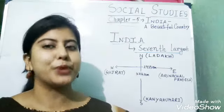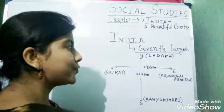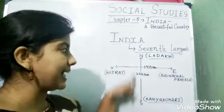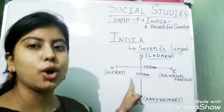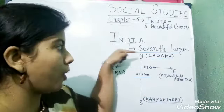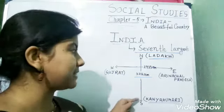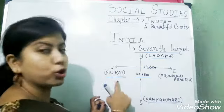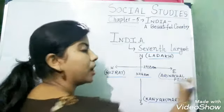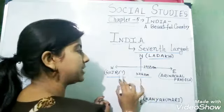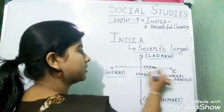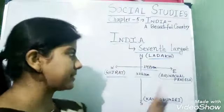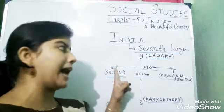India is pretty large. From north, that is Ladakh, to the south, that is Kanyakumari, the length is 3,214 kilometers. In the west we have Gujarat and in the east we have Arunachal Pradesh. The distance between Gujarat and Arunachal Pradesh is 2,933 kilometers. This is the distance from north to south and from west to east.